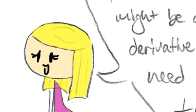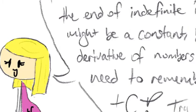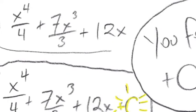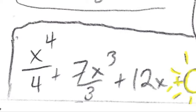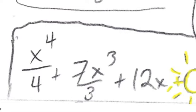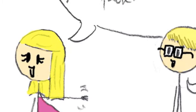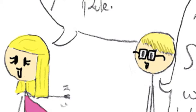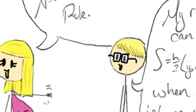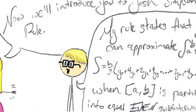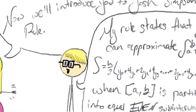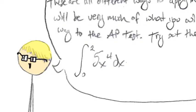Is the answer... You forgot plus c! Okay, the answer is x to the fourth over four, plus seven-thirds x cubed, plus 12x, plus c. Now, we'll introduce you to Josh Simpson's rule. My rule states that you can approximate the integral from a to b of f of x dx as one-third h, parentheses, initial y, plus 4y sub 1, plus 2y sub 2, plus 4y sub 3, plus dot dot dot, plus 2y sub n minus 2, plus 4y sub n minus 1, plus y sub n, where a to b is partitioned into equal even subintervals. These are all different ways to apply integrals. This will be very much of what you will do on your way to the AP test. Try out the Simpson's rule.